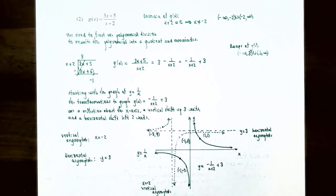So this is a good place to stop our video. We talked about rational functions and their graphs, how to determine the domain of a rational function, and the transformations used to graph a rational function from the basic function y equals 1 over x. If you have any questions about examples in this video or the homework, please let me know. I'll see you at the next video when we talk about how to find the vertical and horizontal asymptotes of a rational function.